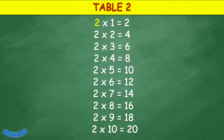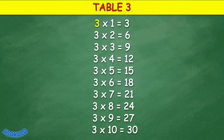Table 2: 2 times 1 equals 2, 2 times 2 equals 4, 2 times 3 equals 6, 2 times 4 equals 8, 2 times 5 equals 10, 2 times 6 equals 12, 2 times 7 equals 14, 2 times 8 equals 16, 2 times 9 equals 18, 2 times 10 equals 20.